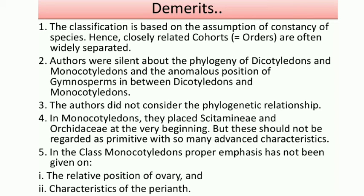Third demerit: the authors did not consider phylogenetic relationships — the evolutionary relationships of plants. They observed natural characteristics but did not address the origin and evolution of these plants.